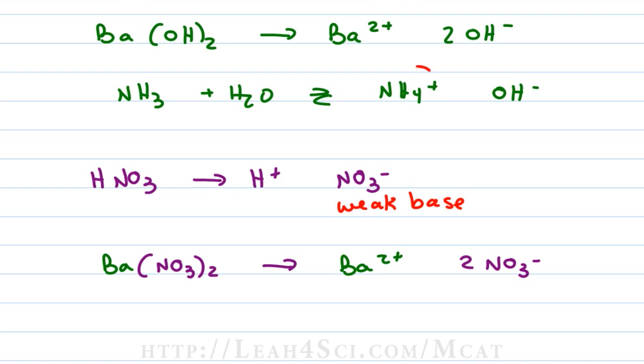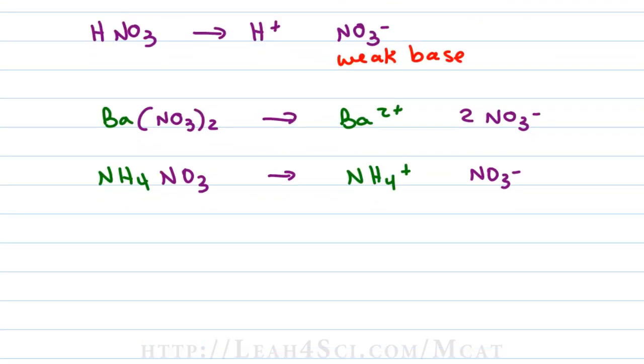But what happens if I take the conjugate acid of my weak base, ammonium and dissolve that as ammonium nitrate in solution? Ammonium nitrate will break down to give me ammonium and nitrate but because ammonium is the conjugate acid of a weak base, it has acidic properties.